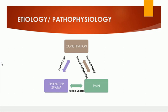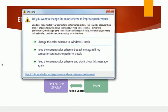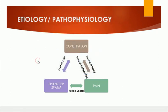Similarly, pain also increases sphincter spasm, and increased sphincter spasm results in further pain. So this is how these three factors — constipation, pain, and sphincter spasm — affect each other in a vicious cycle.